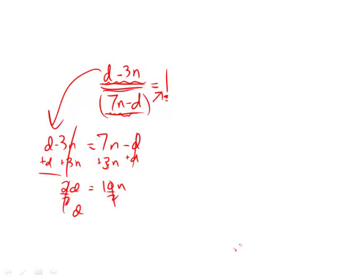Therefore, we're dividing both sides by 2, and I'm getting d is equal to 5 times n, which is answer choice e.